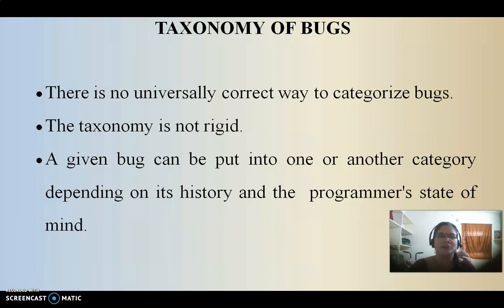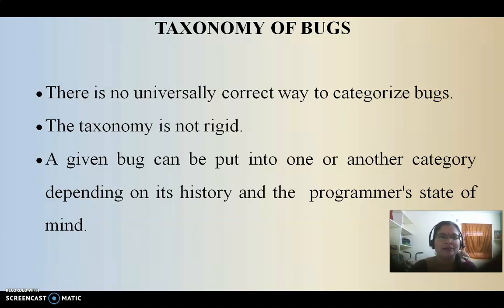What is the meaning of taxonomy? A taxonomy is described as the classification, the categorization — that is called taxonomy. Based upon the situation, based upon the error, whatever bugs are happening, based upon the current scenario, the bugs are categorized into some set of bugs. This can be treated as the taxonomy of bugs — that means the categorization or classification, or simply types of bugs.